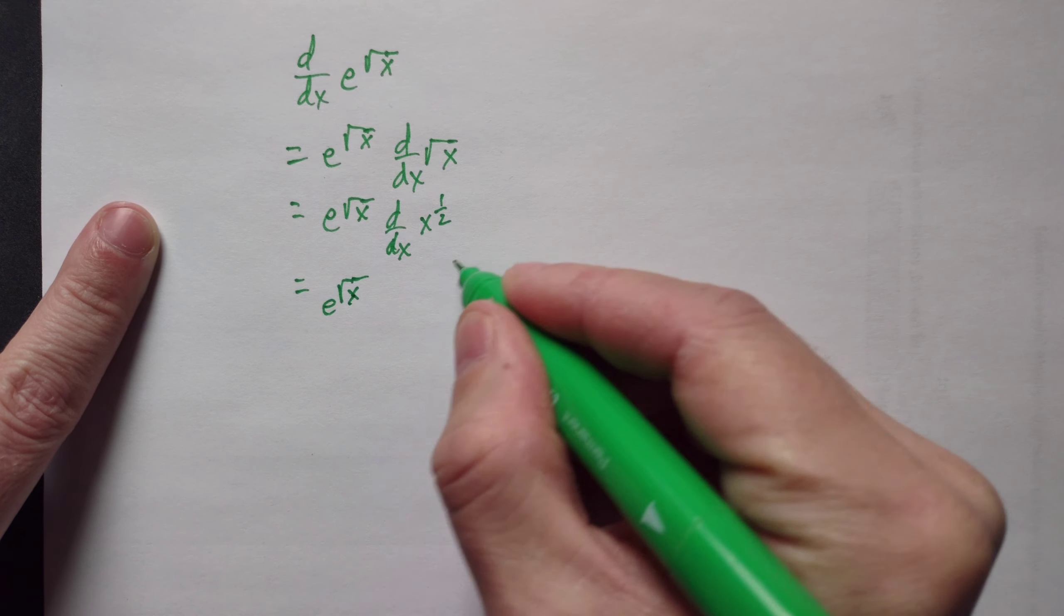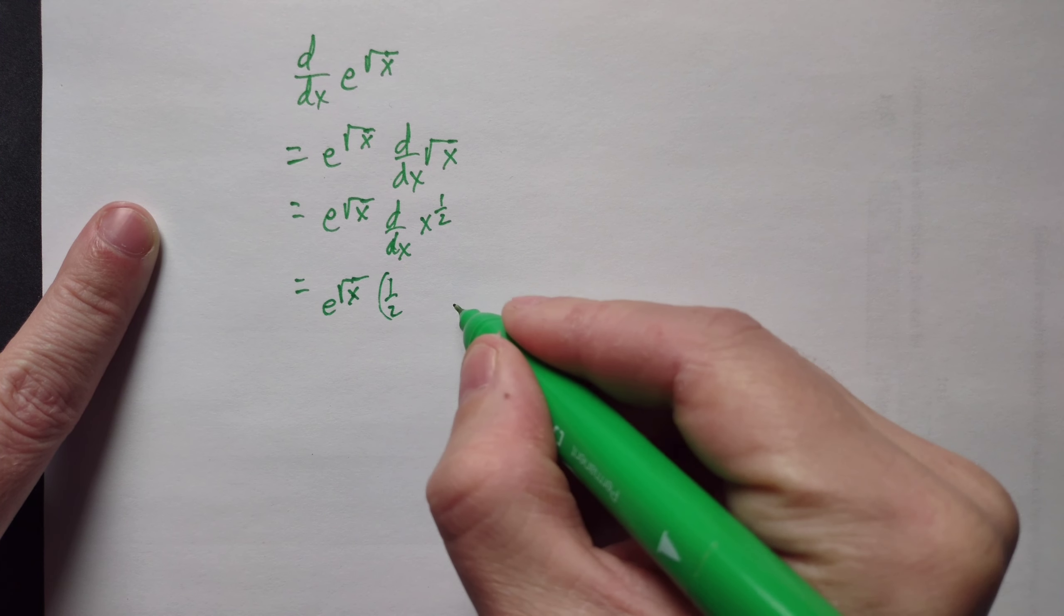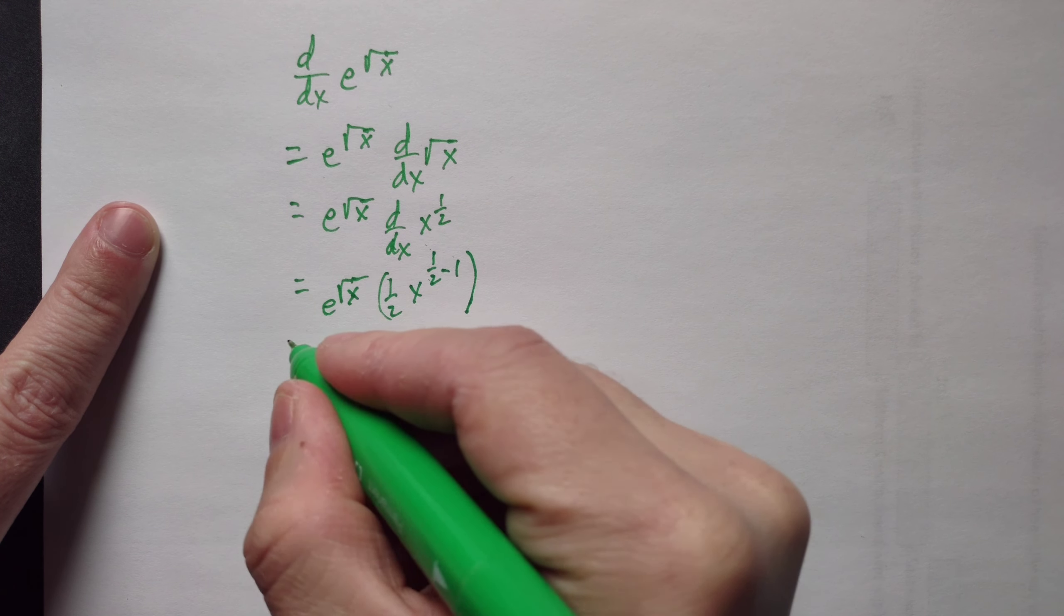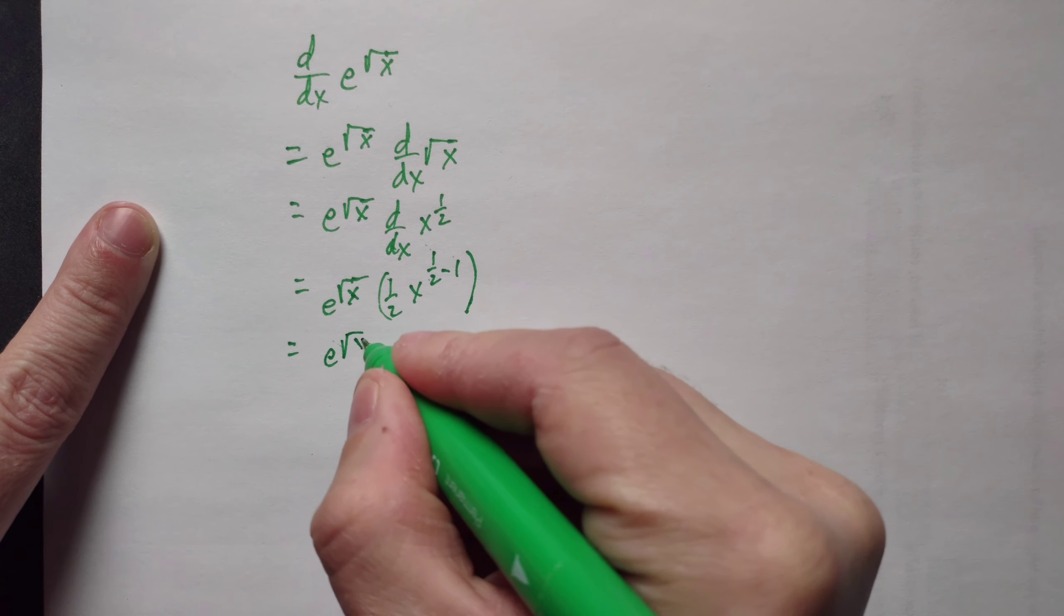e is the outside and the root is the inside. So you're just going to do e to the root of x at first, and then you can multiply by the derivative with respect to x of the inside, which is the root of x here, and then you work with that.